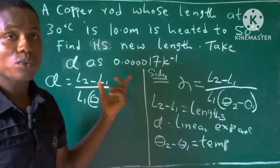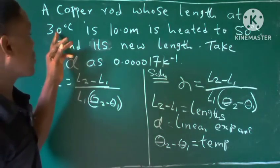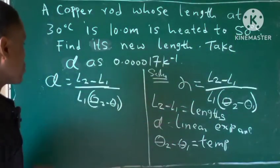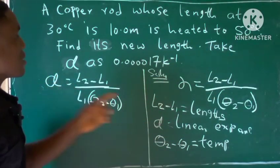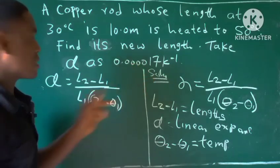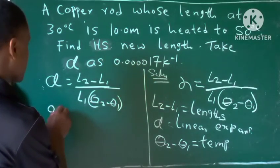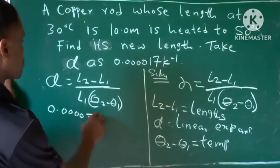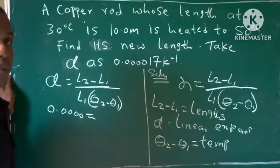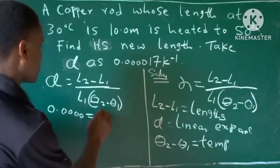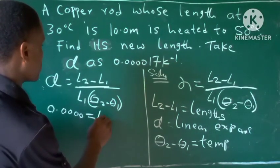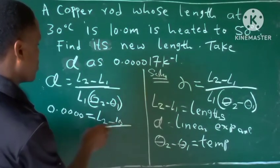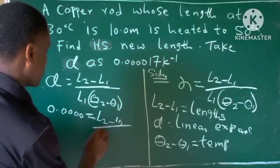Also the two temperatures are given: the 30 degrees Celsius and the 50 degrees Celsius. So we do: the linear expansivity is 0.000017 equals L2 (which is not given, so we are looking for the value of L2, which is the new length) minus L1, which is 10, all over L1, which is 10.